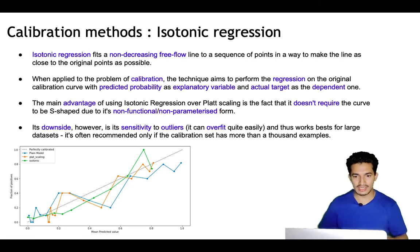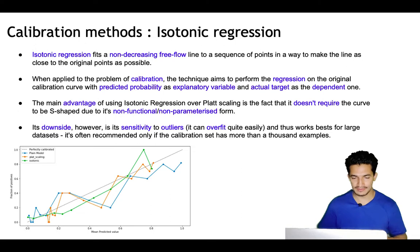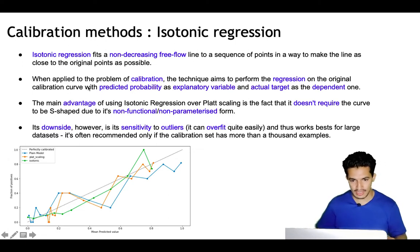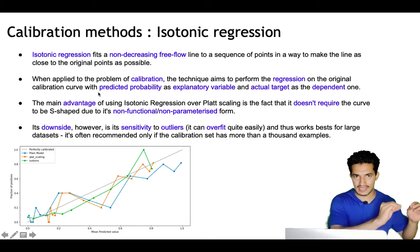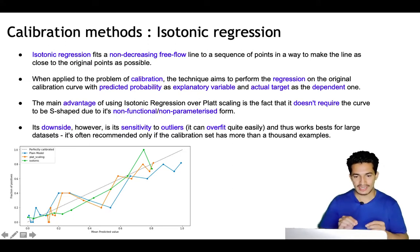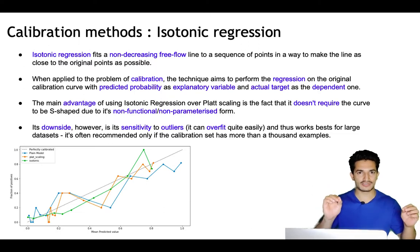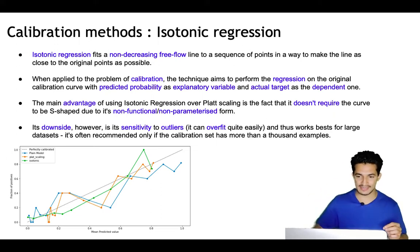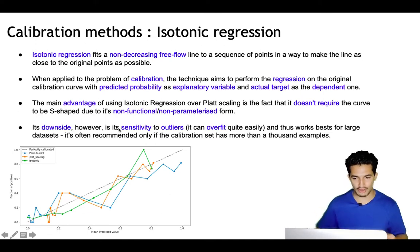The other popular method is isotonic regression. It fits a non-decreasing free-form line to a sequence of points to make the line as close to the original points as possible. When applied to calibration, it performs a regression on the calibration curve with predicted probability as the explanatory variable and the actual label as the dependent variable. Its main advantage over Platt scaling is that it doesn't require the curve to be S-shaped — it's a free-form model without any functional form.